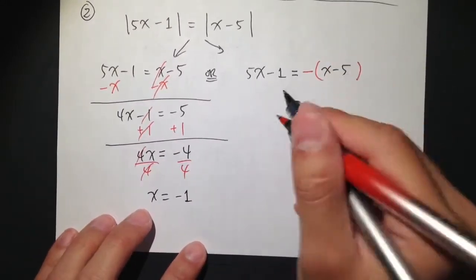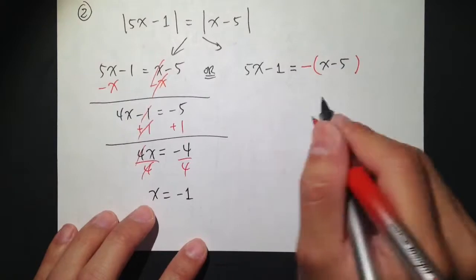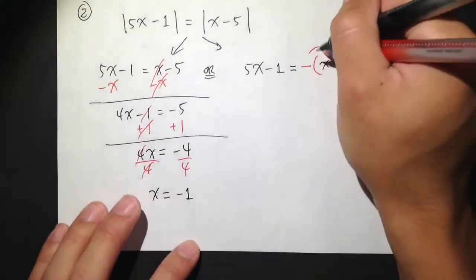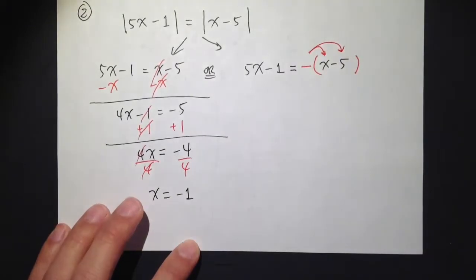And for the second part that we have to do right here, I see a negative and a parenthesis like that, we have to distribute the negative sign.